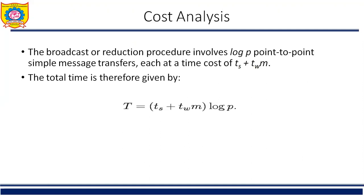After the broadcast and reduction algorithm, we analyze the cost. Analyzing the cost of one-to-all broadcast and all-to-one reduction is fairly straightforward. Assume p processes participate in the operation and the data to be broadcast or reduced contains m words. The broadcast or reduction procedure involves log p point-to-point message transfers, each at a time cost of Ts + Tw*m. Therefore the total time is T = (Ts + Tw*m) * log p.